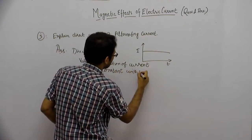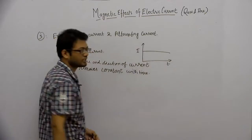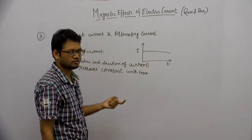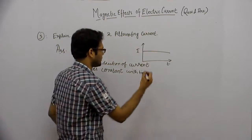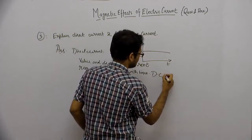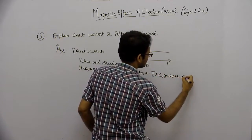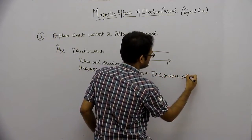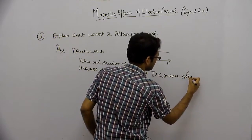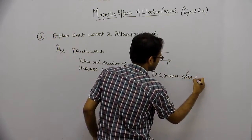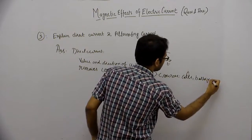Direct current के sources हैं — cells, battery, etc.